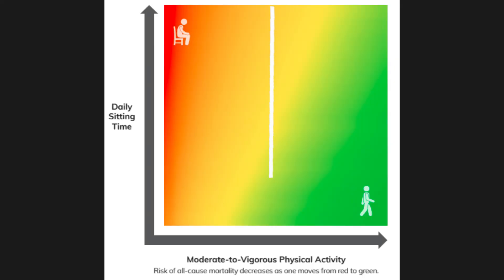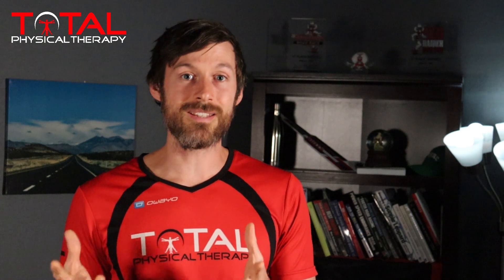Now, if you look at this graph, you might be asking: I see sedentary behavior or sitting, I see moderate to vigorous activity, but I don't see light intensity activity anywhere on this graph. And actually, we do. If you keep your moderate to vigorous activity the same but decrease the amount of time you're sitting — decreasing your sedentary activity while your moderate to vigorous stays the same — essentially what you're doing is increasing your light intensity activity.